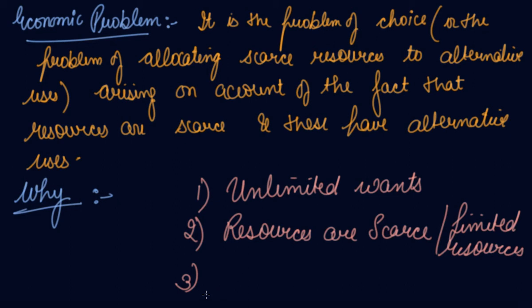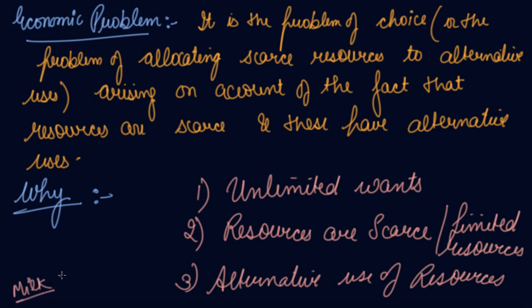Third is the alternate use of resources. The same resource is used for various things. Like milk is used to make cheese, butter, all the dairy products. So milk has alternative uses, different uses. How will you allocate your milk so that all the demand is fulfilled and the milk is efficiently and effectively utilized?